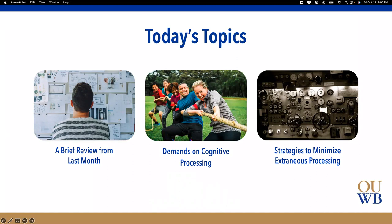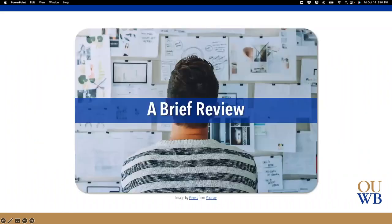We have three main topics today. We'll start with a brief review from last month to set the stage, then shift into the demands on cognitive processing — there are three of them — and one of them is extraneous processing. That specific subtopic will lead into the bulk of today's session: strategies to minimize extraneous processing.